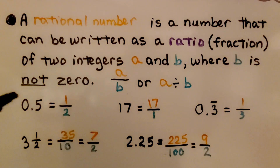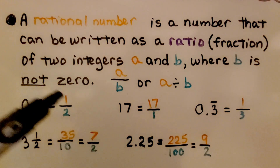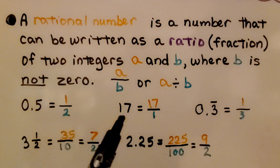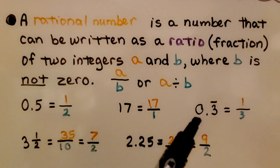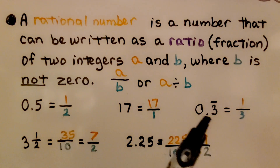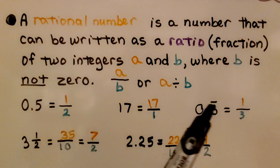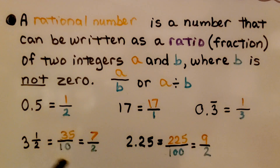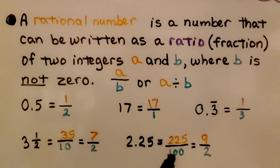We have 5 tenths, that's equal to 1 half — it can be written as a ratio, a fraction, so that's a rational number. We can write the whole number 17 as 17 over 1. We have 1 third as 0.3 with a bar over the top, showing that the 3 repeats. We have 3 and a half, which is 35 tenths or 7 halves. We have 2 and 25 hundredths, which is 225 hundredths, or in simplest form, 9 halves. These are all rational numbers.